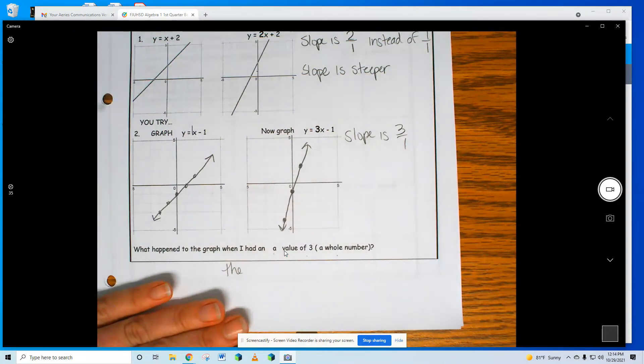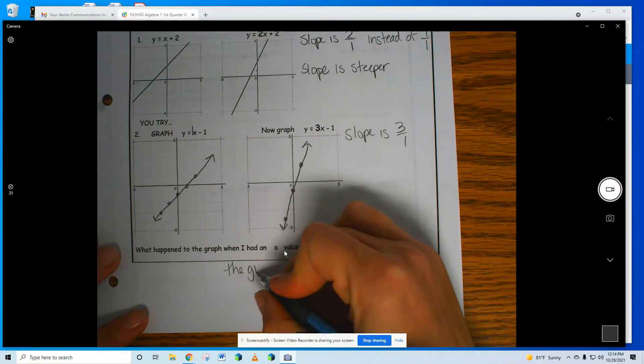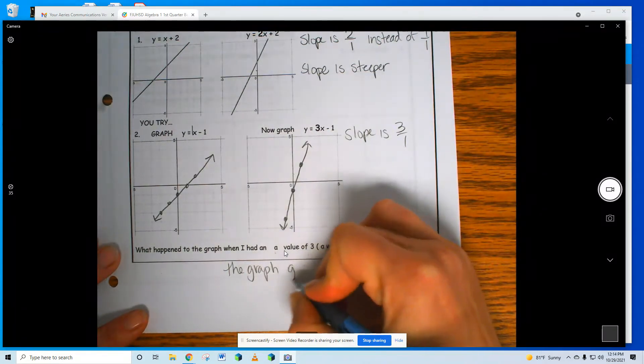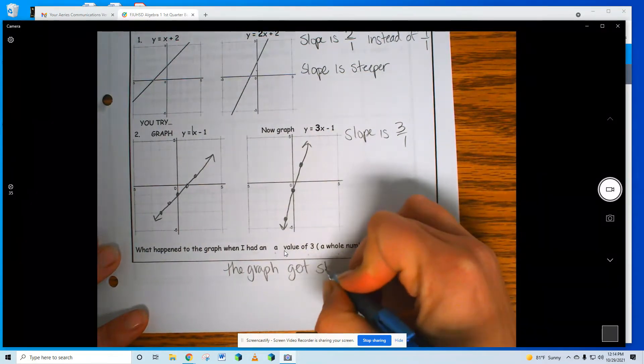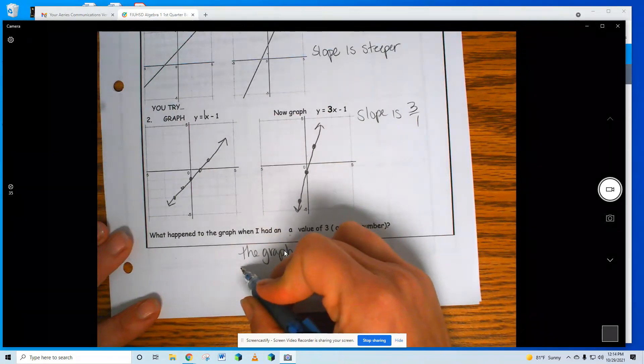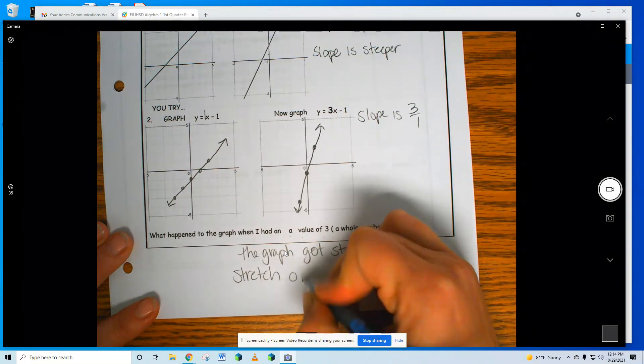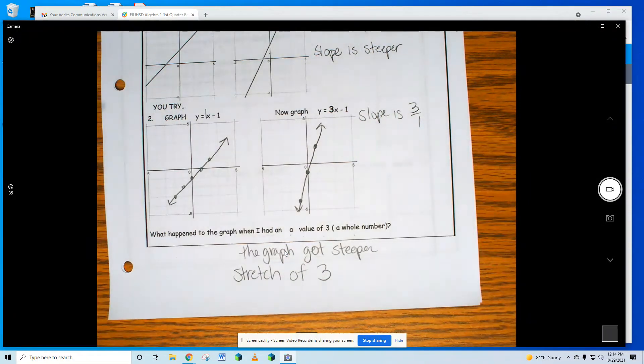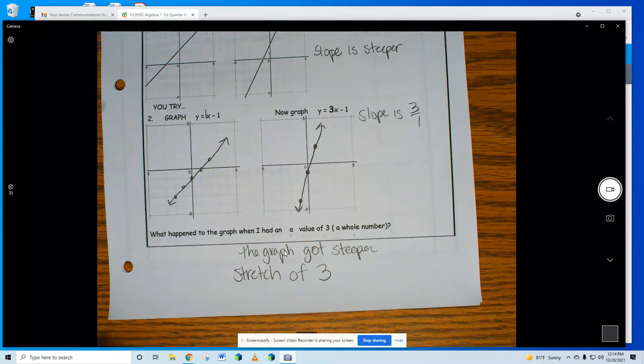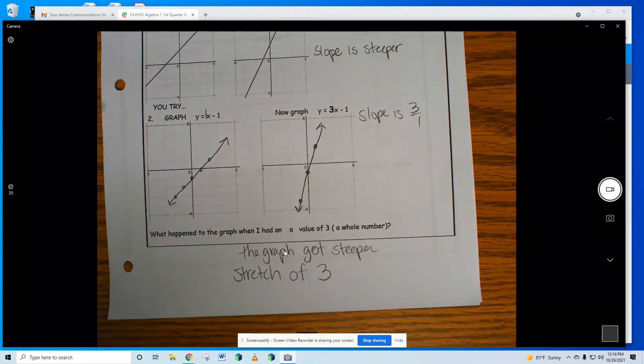What happened when I put an a value of 3, a whole number 3? It stretched. So the graph gets steeper, it stretches. Here's how I write it in math terms: it had a stretch of 3.